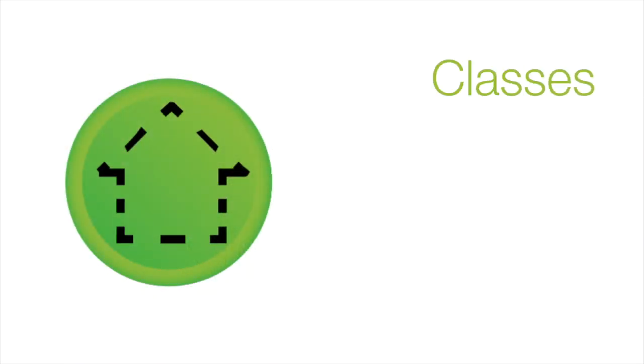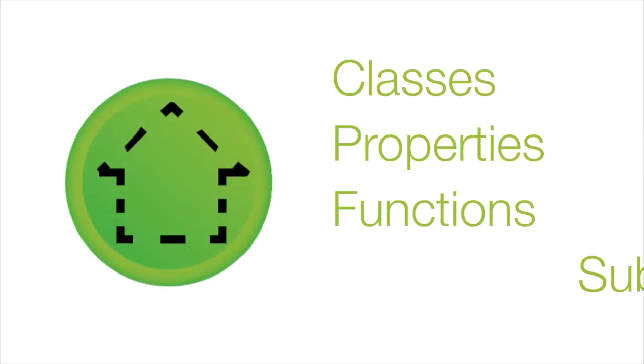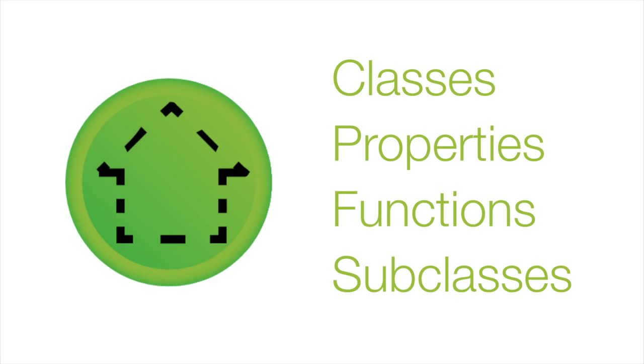The Codable Curriculum teaches four object-oriented programming units: Classes, Properties, Functions, and Subclasses. Before we get into what each unit really is, let's talk about what object-oriented programming is, why it's important, and how we'll learn it through the Codable Curriculum.